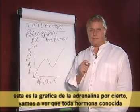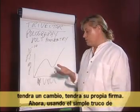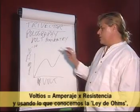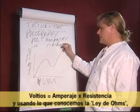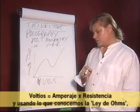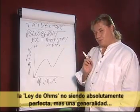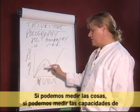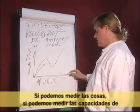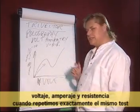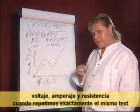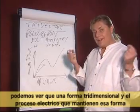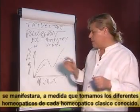This is the picture of adrenaline, by the way. We're going to see that every known hormone will have a change — its own signature. By a simple trick of using volts equals amps times resistance — Ohm's law, which is more of a core principle than an absolute — we can generate what I call the tri-vector. If we measure the items' voltage, amperage, and resistance capacities when we do exactly the same test, we can see that a three-dimensional shape and an electrical process that helps to hold that shape will manifest.